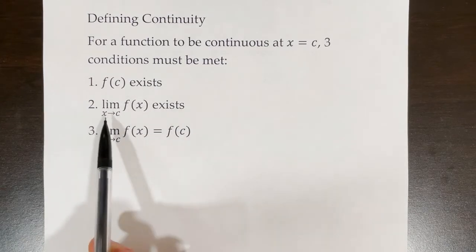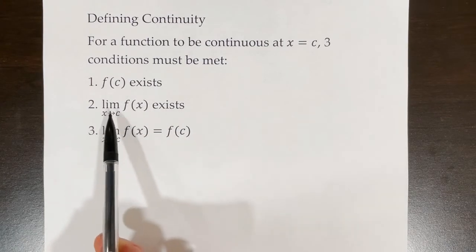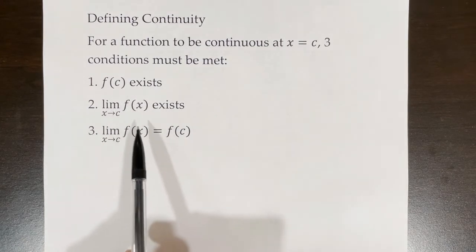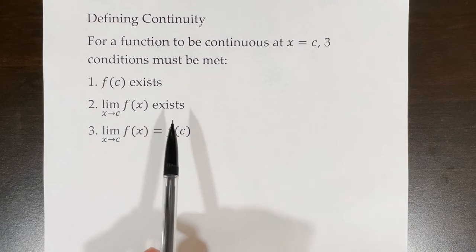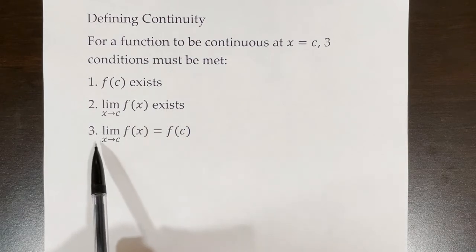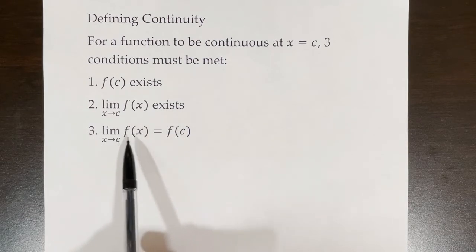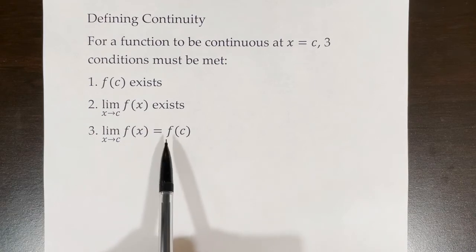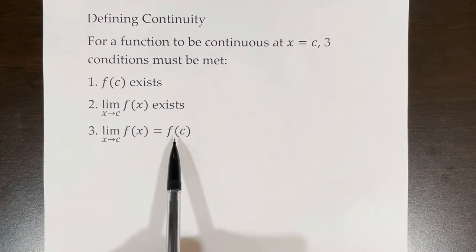The second condition is that the limit of f of x as x approaches c must also exist. And the third condition is that the limit of f of x as x approaches c must equal the actual value at c.